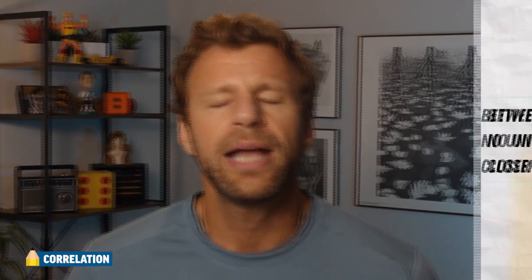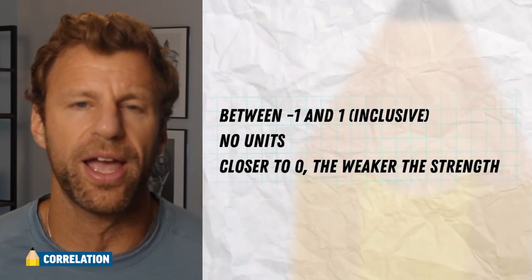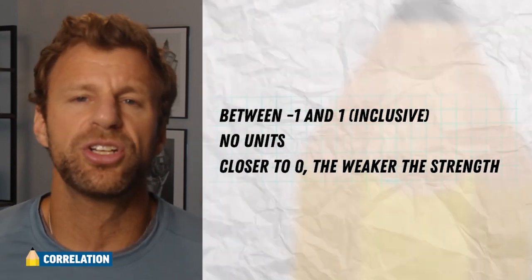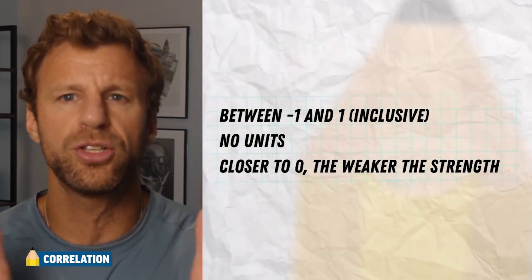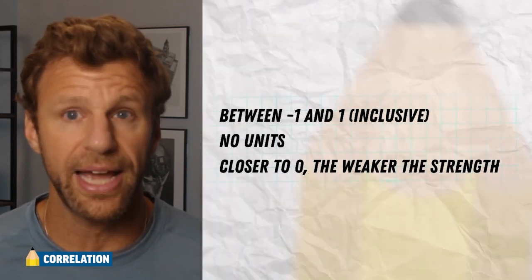Now, there's a couple key aspects. First, I mentioned that it gives the direction. That's because correlation can be either positive or negative. So if it's positive, the direction is positive. If it's negative, then the direction is negative. That's pretty straightforward. Now, how does it quantify strength? Well, that's because correlation is on a scale from negative one to one, including negative one and one.